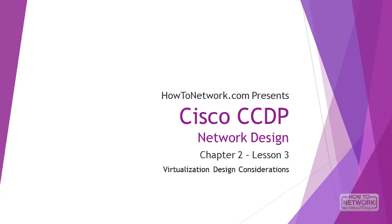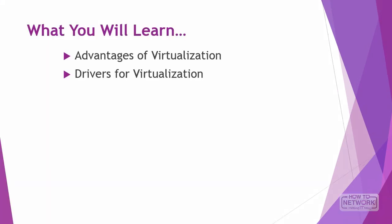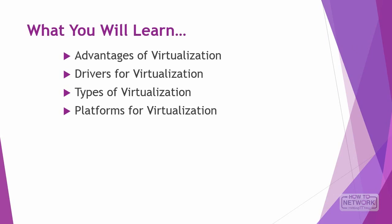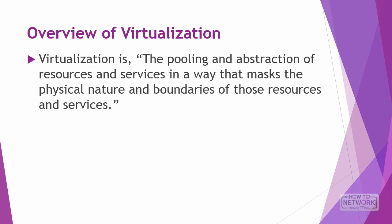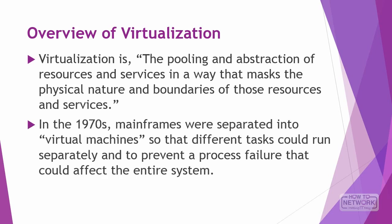Hi, this is David Voss, CCIE 11372. In this video, you're going to learn about Cisco virtualization — the advantages, its drivers, types of virtualization, and platforms that support it. The official definition of computer virtualization is the pooling and abstraction of resources and services in a way that masks the physical nature and boundaries of those resources. A good example is a VLAN. The concept of virtualization dates back to the 1970s with IBM mainframes separated into virtual machines so different tasks could run separately and prevent a process failure from affecting the entire system.